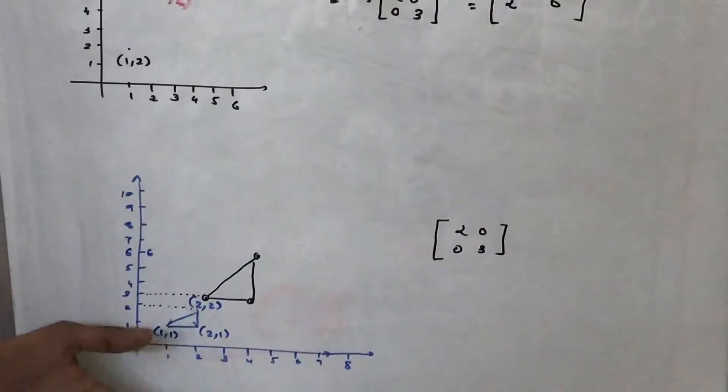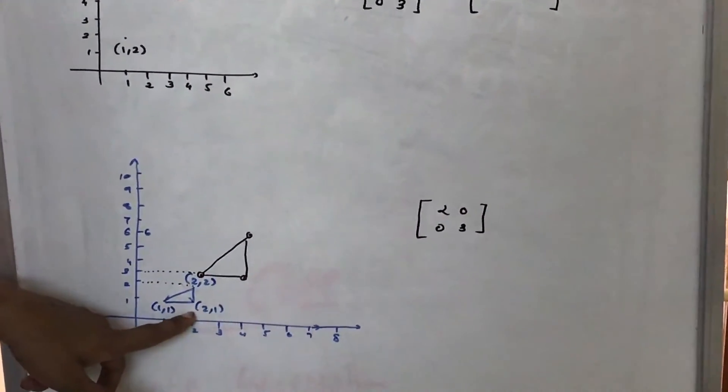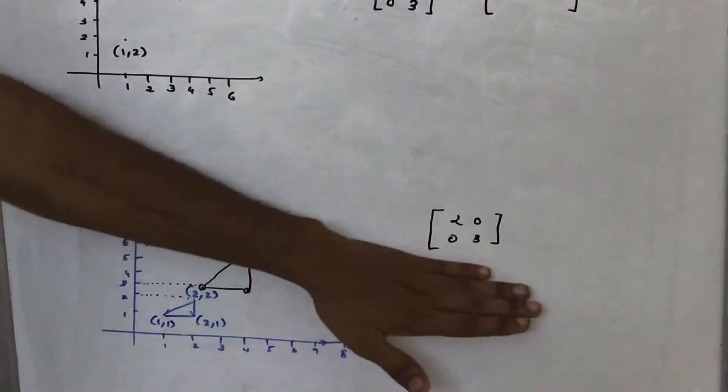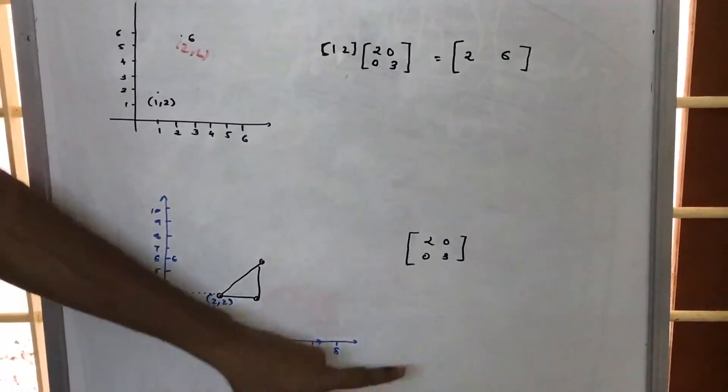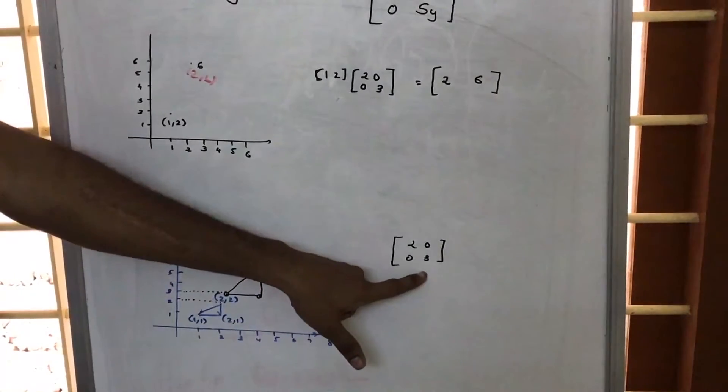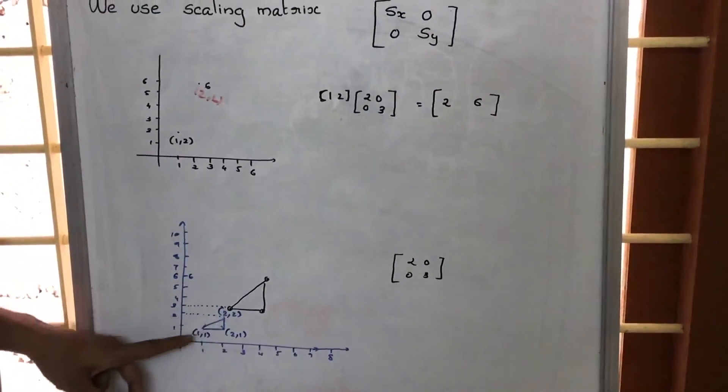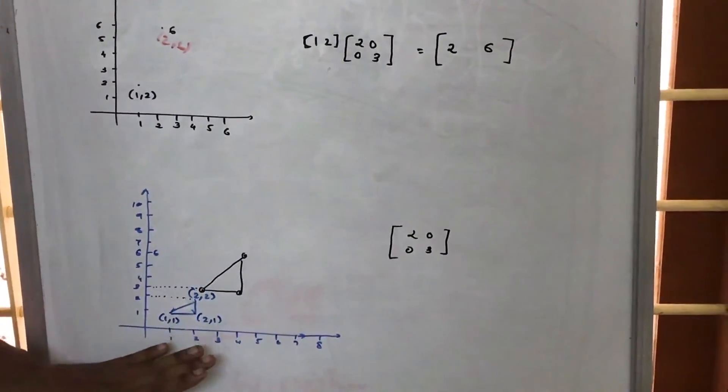So in CAD what we do is we will be increasing the size of triangle by making a program by introducing this scaling matrix. We will be making a C++ or some other program by introducing the scaling matrix. And by multiplying the vertices of this triangle with this matrix we are able to alter its size, here we are able to increase its size.